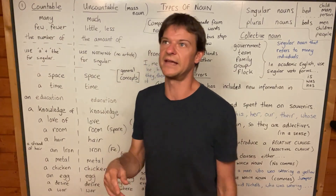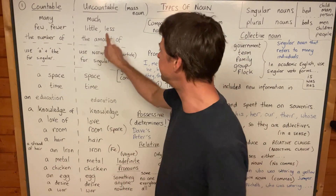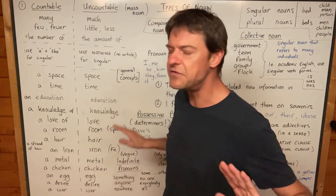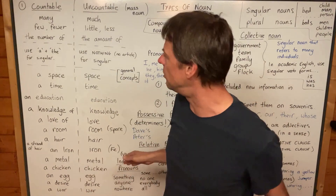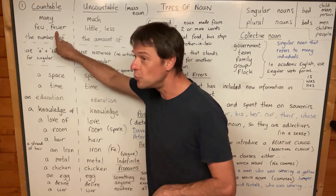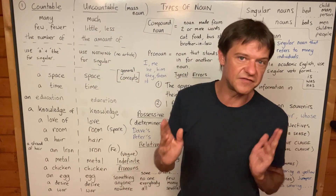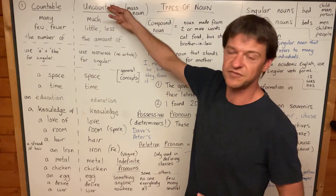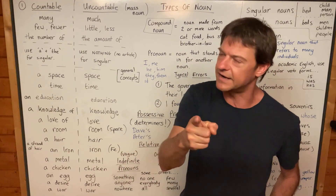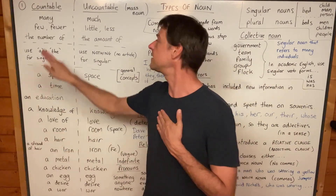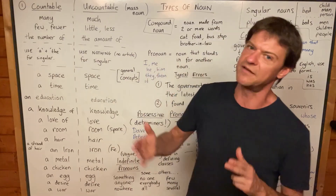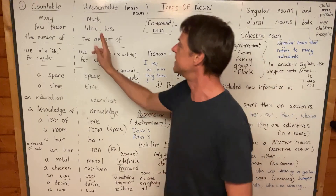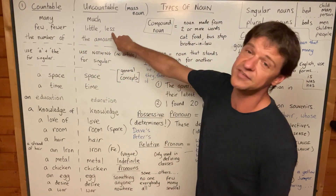Most natives say 'there are less cars on the road nowadays,' and that is wrong. Even though natives say it, it is wrong. They should say 'there are fewer cars on the road nowadays.' Most natives use 'less,' which is for uncountable nouns. I want you to be better than the natives and say 'I make fewer mistakes now that I've finished this course' — not 'I make less mistakes,' which would not be correct.